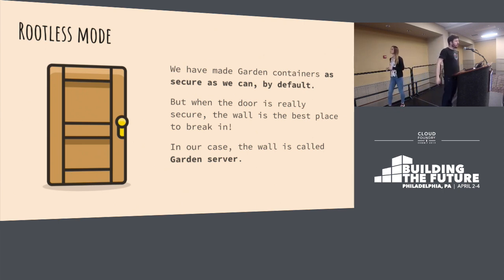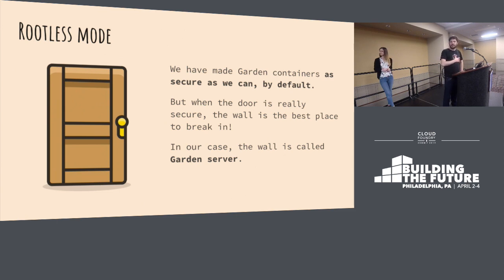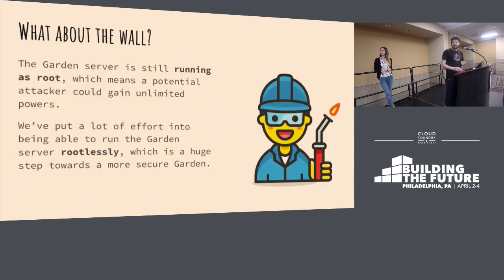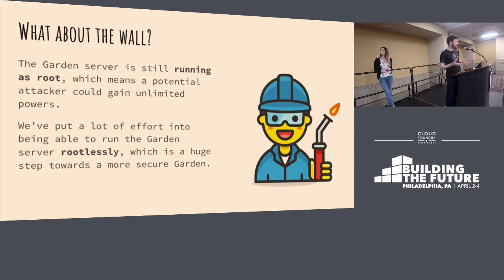We talked about security earlier and how we enable all these security features for every container in Garden — our containers are quite solid. But as soon as you have a very secure door, you should start worrying about the wall, because that becomes the next likely target for attack. In our case, the wall is the Garden server, which is still running as root — meaning if an attacker gets control of it, they have basically unlimited power on the system. We don't want that to happen, so we've been putting in lots of work to run Garden as an unprivileged user, so even if an attacker got control, they'd still be an unprivileged user with limited power.